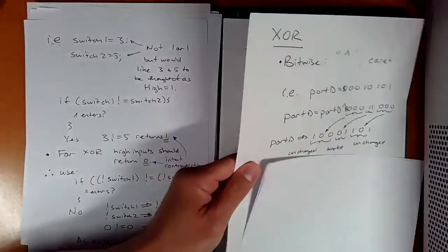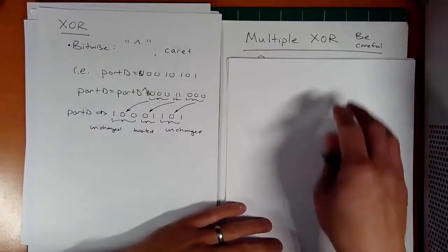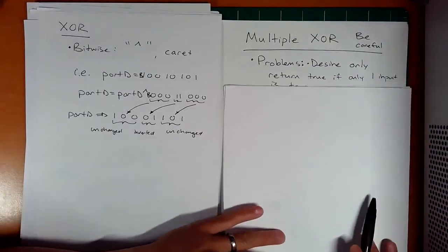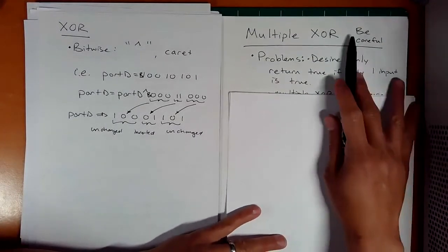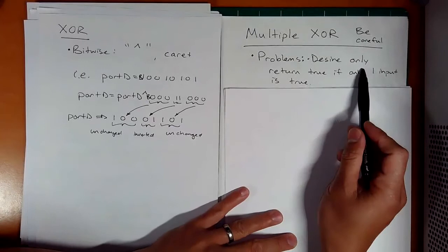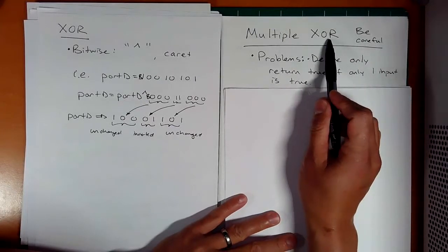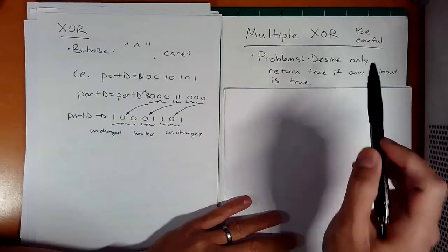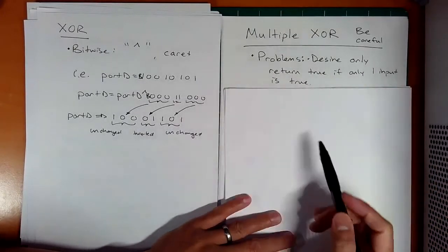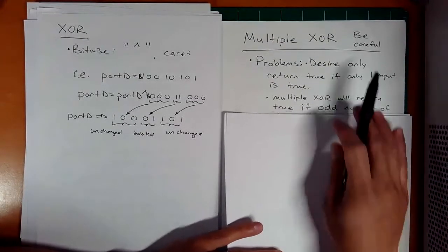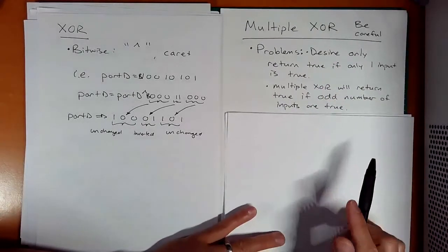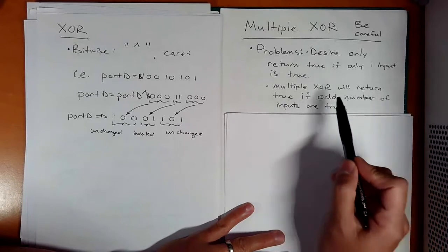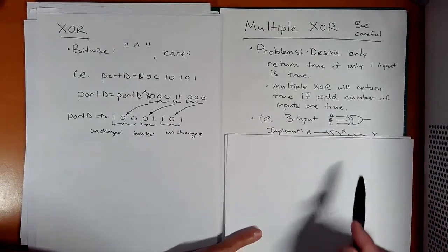As a little aside, what happens if you have multiple exclusive OR inputs? You got to be careful here. It depends on your intent. Sometimes you might think that multiple exclusive ORs will give you an output where it only returns true if singularly one input is true. That's just not the case if you cascade a bunch of exclusive ORs. Multiple exclusive ORs will return true if an odd number of inputs are true.